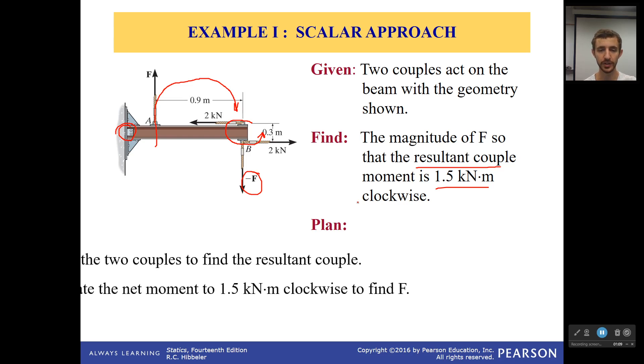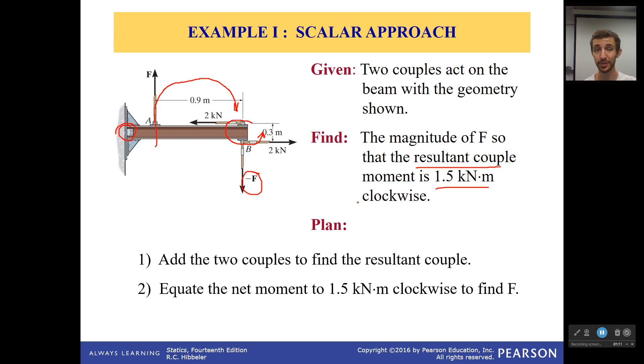So how are we going to do this? Well, we're going to add the two couples. We're just going to calculate the couple for each of them. What we'll have to do is just algebraically because we don't have the actual value here. And we're going to equate this and say, well, that's all going to equal 1.5 kilonewton meters clockwise, and solve for F.